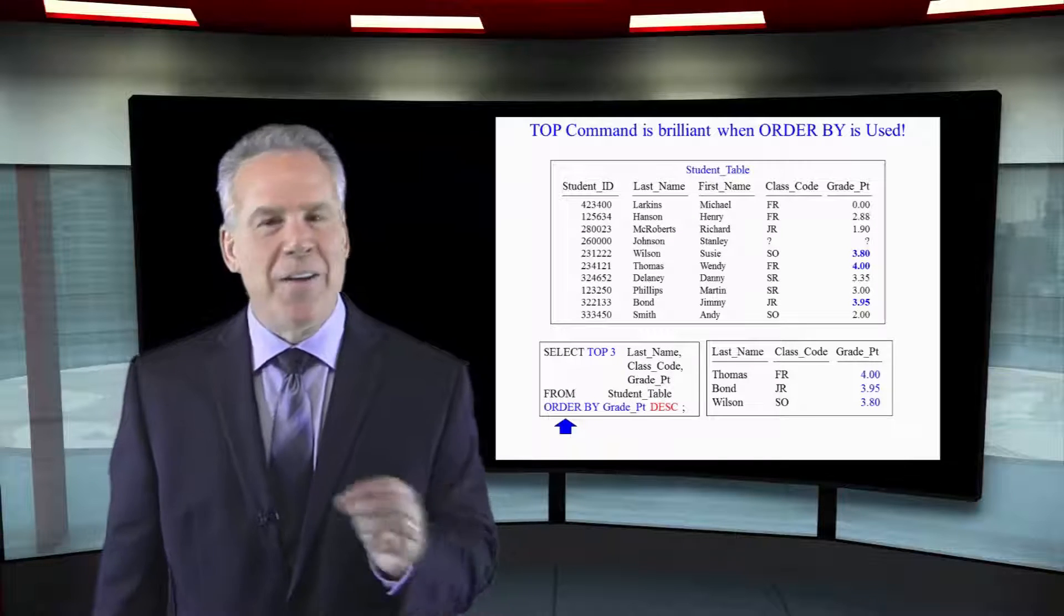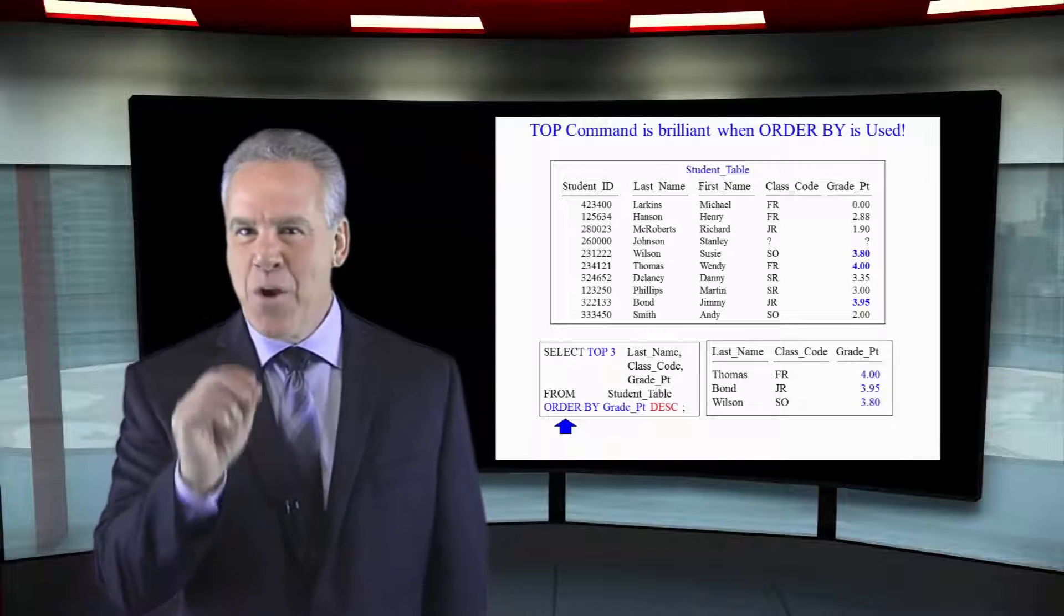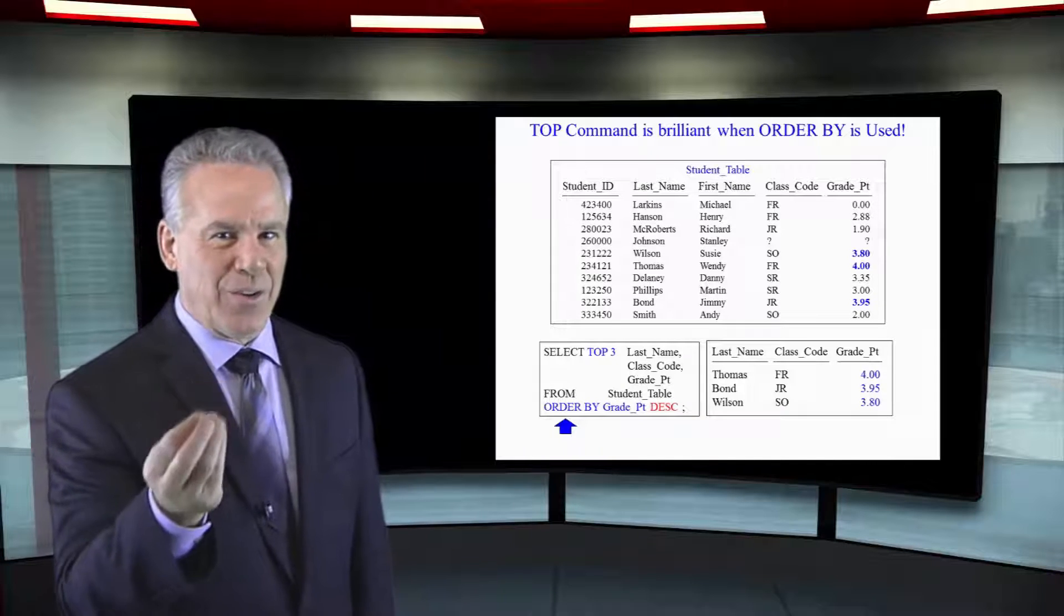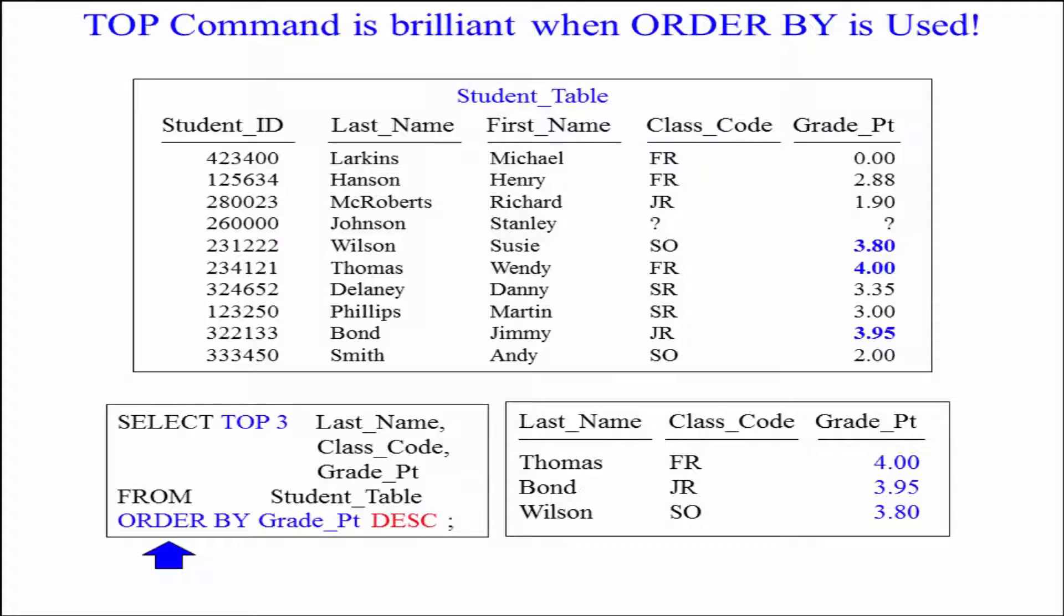This is the brilliance of the top command. Let's just get right to it. You put an order by in the query. We just saw this query. Select top three, last name, class code, grade point from student table. But when we say, order by grade point descending.